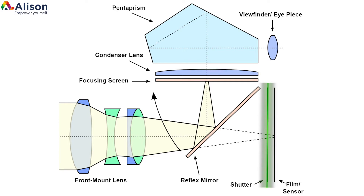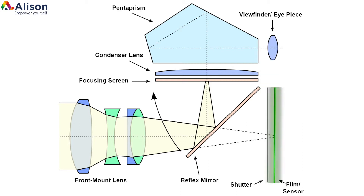The shutter: when the shutter opens, light is collected and it falls on the film or the sensor. In the case of the DSLR, the film or sensor affects the characteristics of the camera and how your photography will look.